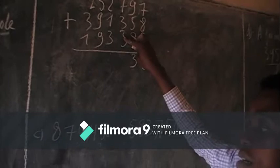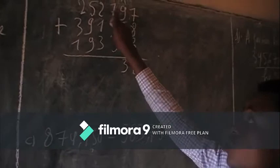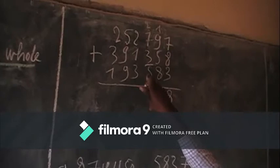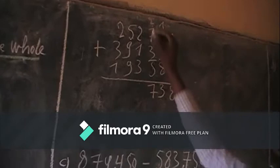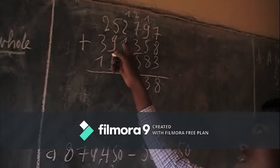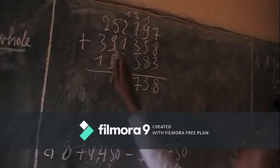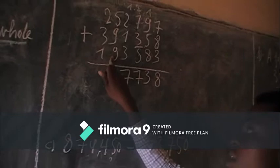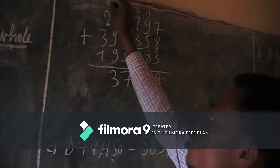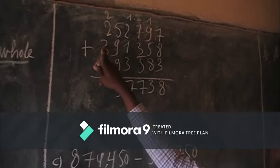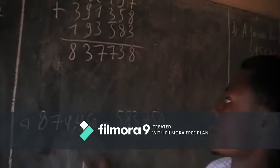Here it is 5. Then 2 plus 7 is equal to 9. 9 plus 3 is equal to 12. Then 12 plus 5 is equal to 17. And carry 1. 1 plus 2 is equal to 3. 3 plus 1 is equal to 4. Then 4 plus 3 is equal to 7. Then 5 plus 9 is equal to 14. Then 14 plus 9 is equal to 23. Write 3 and carry 2. Then 2 plus 2 is equal to 4. Then 4 plus 3 is equal to 7. Then 7 plus 1 is equal to 8.